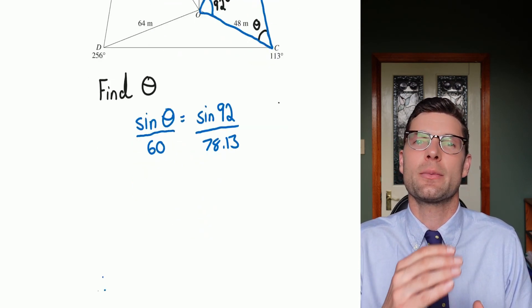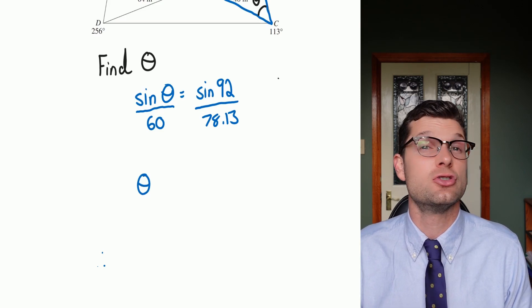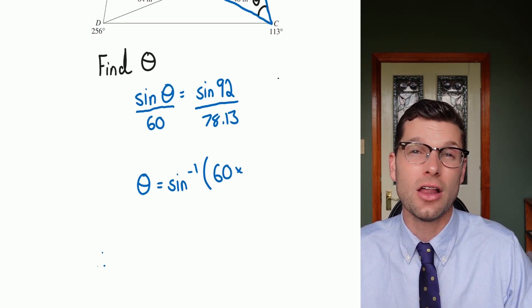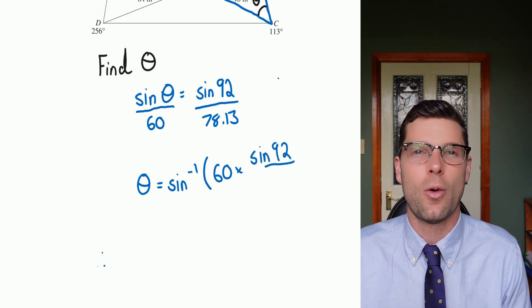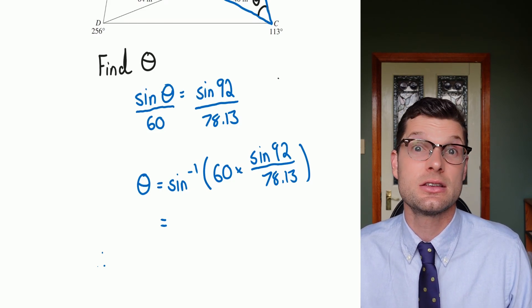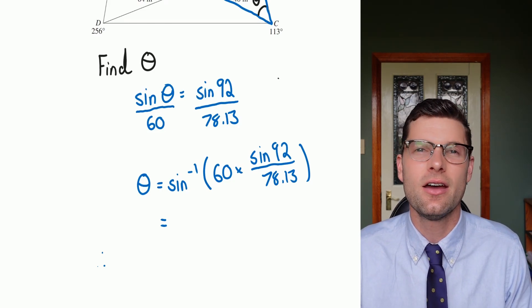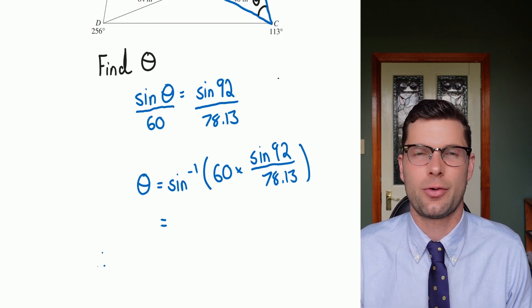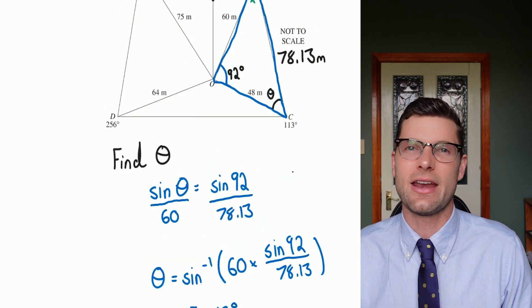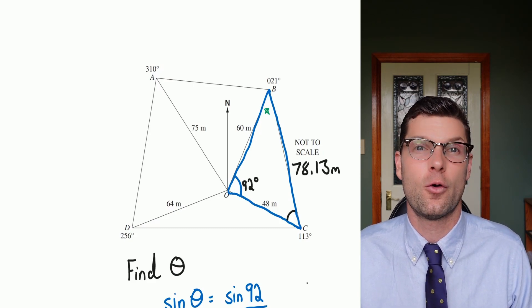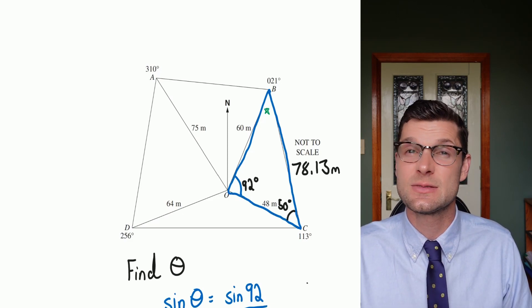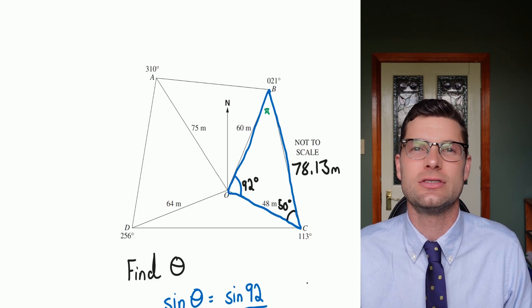Now we've got to get theta by itself, so I'm going to times 60 over to the other side, and then I've got to remember to do sine minus one, or the inverse of sine to get rid of that, in order to get theta by itself. I like to just skip to that sine minus one straight away and then type that into my calculator. It just saves a little bit of work. So all I've got to type into my calculator is sine minus one, 60 multiplied by what was on the other side, which is sin 92 over 78.13. Hit equals in your calculator, and you get the answer of 50.13 degrees. Throw that in straight away, and now we've found all the angles and all the side lengths for this triangle.